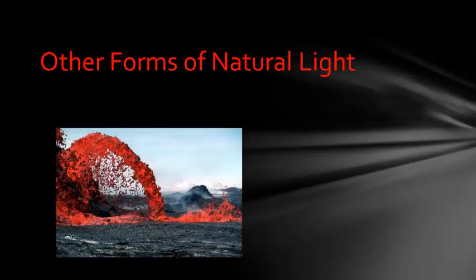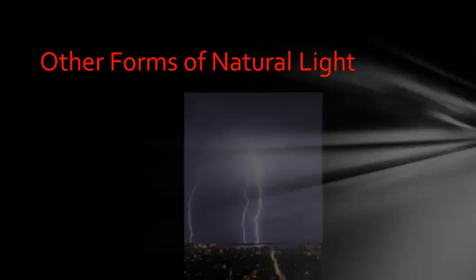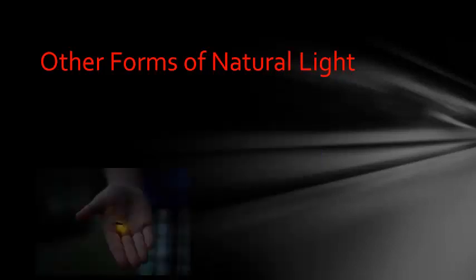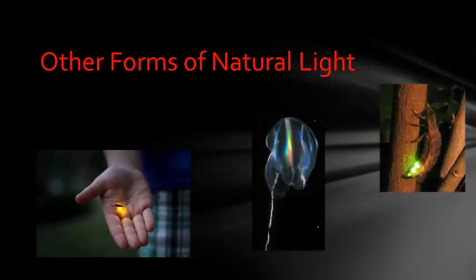There are other forms of natural light, including lava that comes from volcanoes, which is so hot that it glows. Lightning is another form of natural light. Lightning is made up of particles in the air that become so hot that they create light energy. And certain animals, such as fireflies, jellyfish, and glowworms, make light through a chemical process known as bioluminescence.